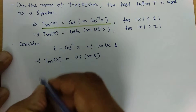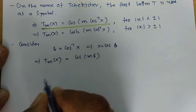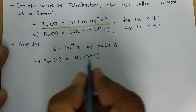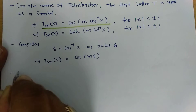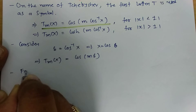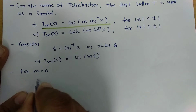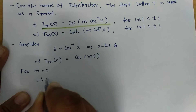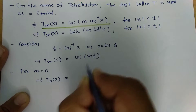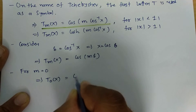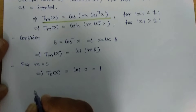To get the polynomial, I will be considering m equals 0, m equals 1, and then we will see what the function of T is. For m equals 0, we will have T0 of x, and by placing 0 in this, we get cos 0, and cos 0 is 1.